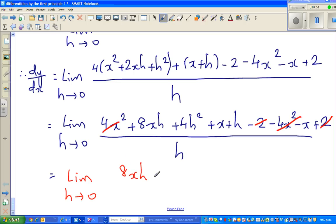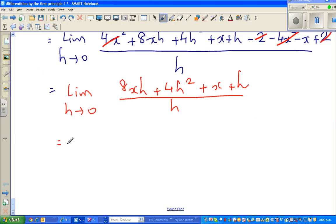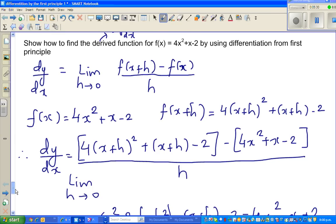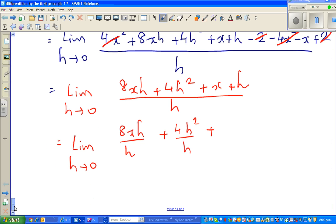So this will be whatever has remained, that is 8xh plus 4h squared plus x plus h over h. So now I'm going to distribute this h to each of them. So limit when h approaches 0 of 8xh over h plus 4h squared over h plus...